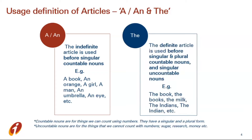The definite article 'the' is used before singular and plural countable nouns, and singular uncountable nouns. For example: the book (singular), the books (plural), the milk, the Indians, etc. Countable nouns are things which we can count easily — they can be singular and plural both. Uncountable nouns are things that we can't count, for example sugar, water, air, tea, and so on.